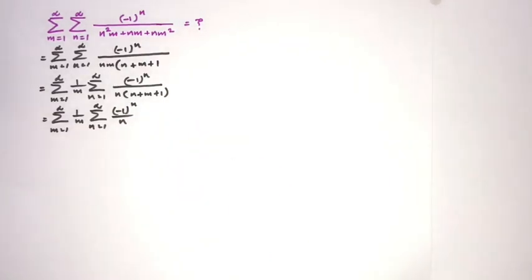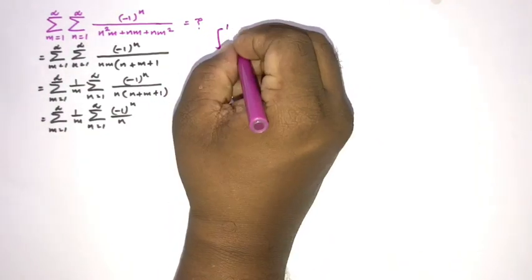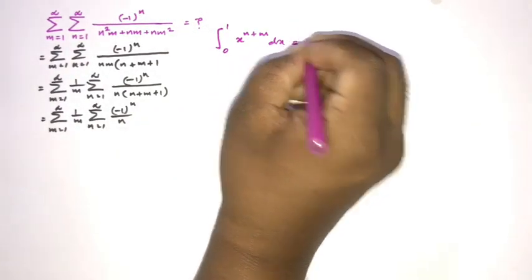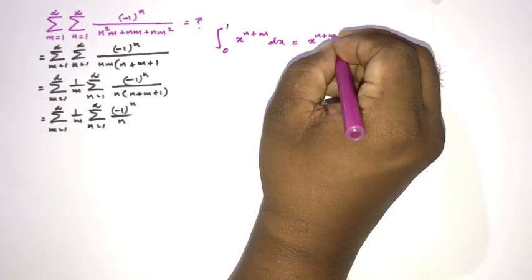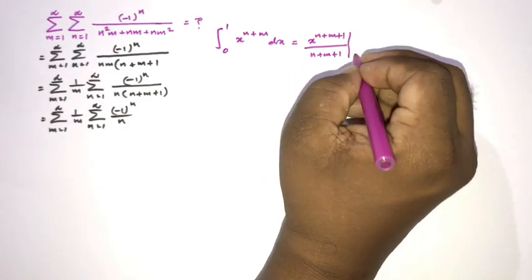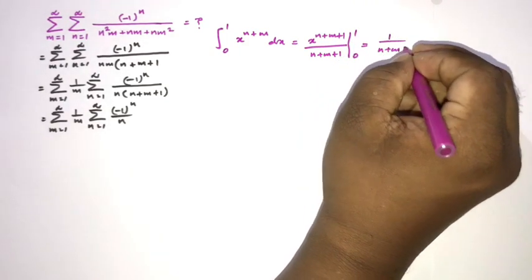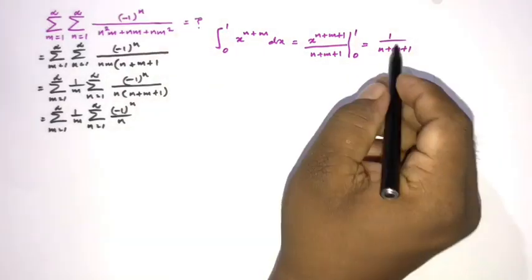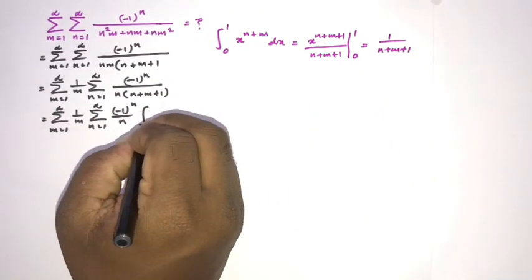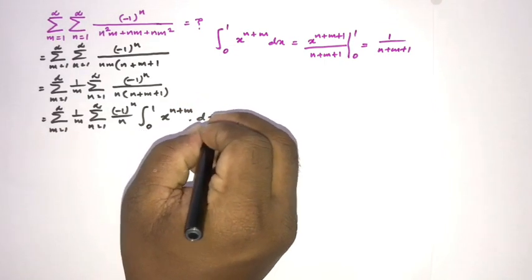As a next step, we consider an integral representation. We know that the integral from 0 to 1 of x^(n+m) dx equals x^(n+m+1)/(n+m+1) evaluated from 0 to 1, which gives 1/(n+m+1). So instead of 1/(n+m+1) we can write the integral from 0 to 1 of x^(n+m) dx.